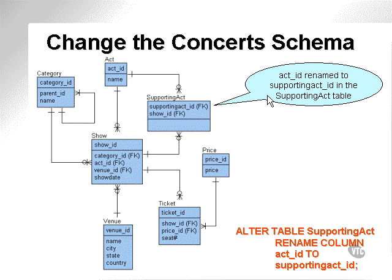The first one I'm going to explain is the ON clause. In order to explain it properly, I'm going to make a change to my schema. What I'm going to do is change the name of the supporting act ID field to 'supporting act ID', making the names of the act ID different between the act and the supporting act table. You can do this by running a command such as this.